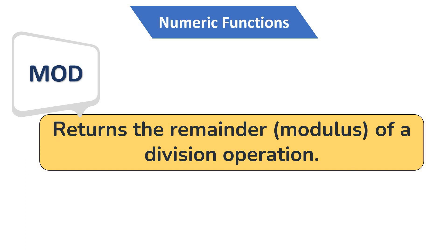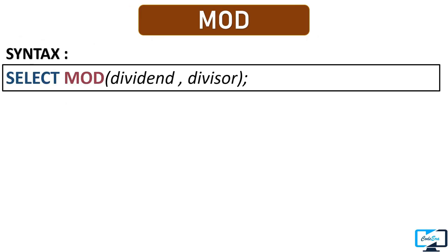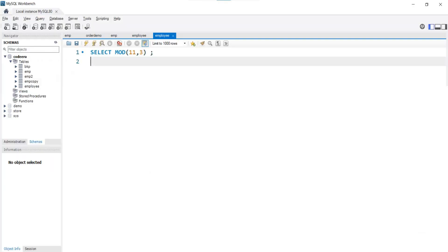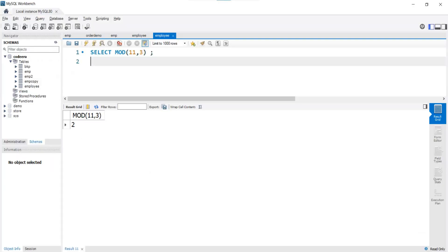Our next numeric function is MOD. This function is used to get the remainder or the modulus of a division operation between two numbers. To get the remainder we pass the dividend and the divisor as parameters. For example, with a dividend of 11 and divisor of 3 — after executing the query, our output is 2, which is the correct result.